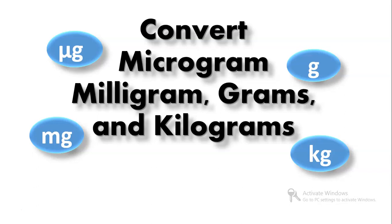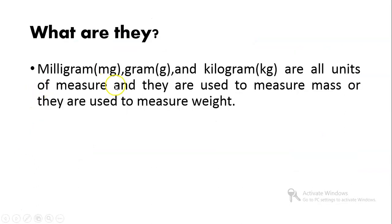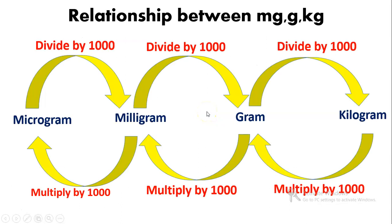Milligram, gram, and kilogram are all units of measure used to measure mass or weight. Microgram is the smallest unit of measure when compared to milligram, gram, and kilogram, and kilogram is the largest unit of measure.